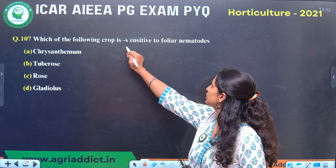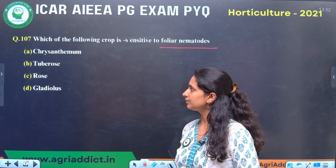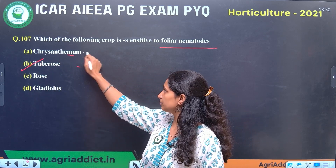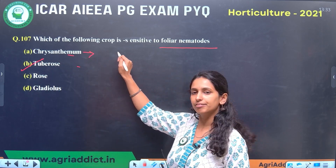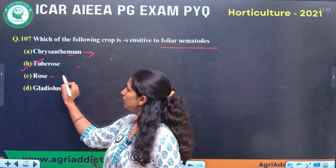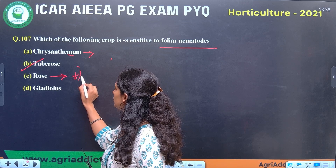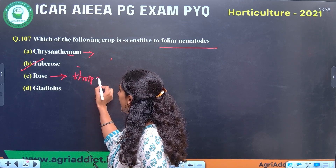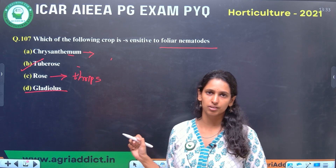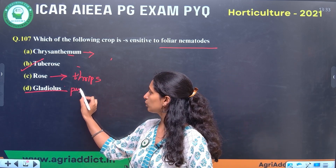Next question: which of the following crops is sensitive to foliar nematode? Foliar nematode is very prominent in Tuberose. In other crops like Chrysanthemum, the main pests are sucking pests like aphids and mites. In Rose, the main problem is thrips, which lead to deformation of flowers. In Gladiolus, nematode problems are also known.